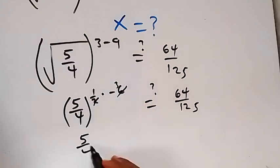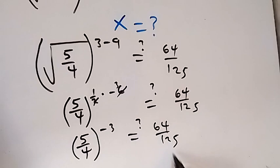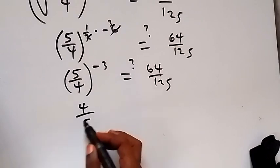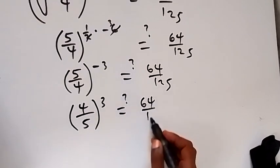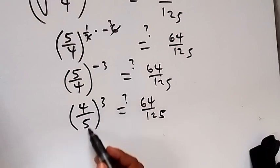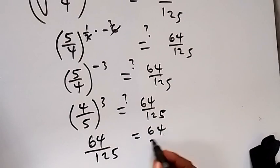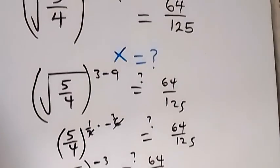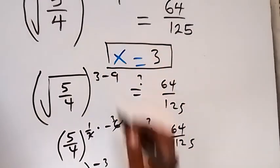From here we get 5 over 4 raised to power minus 3. Is this equal to 64 over 125? The minus power means we take the reciprocal, giving 4 over 5 raised to power 3. We check: 4 raised to power 3 is 64, and 5 raised to power 3 is 125, which equals 64 over 125. The left-hand side equals the right-hand side, hence we confirm that x equals 3 is our solution.